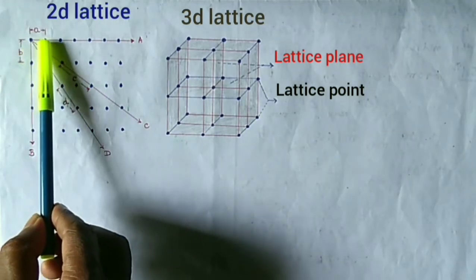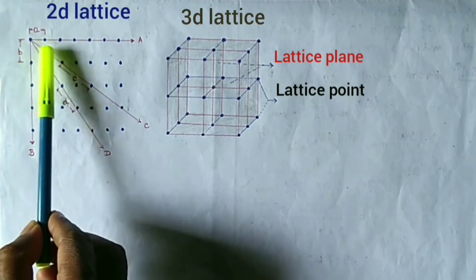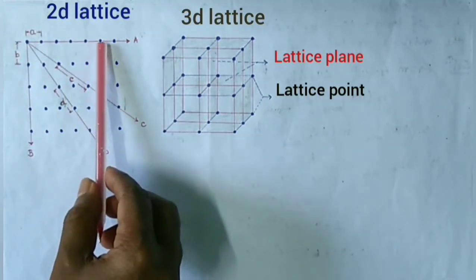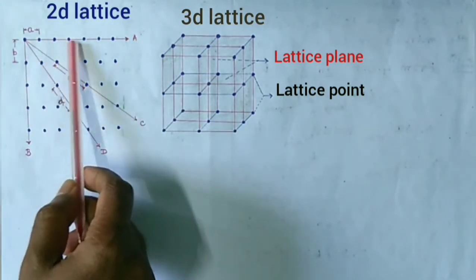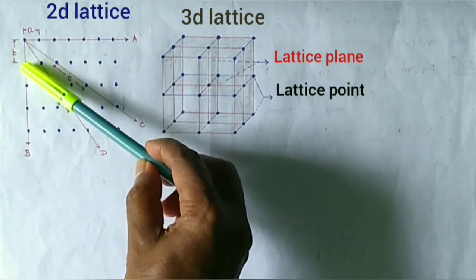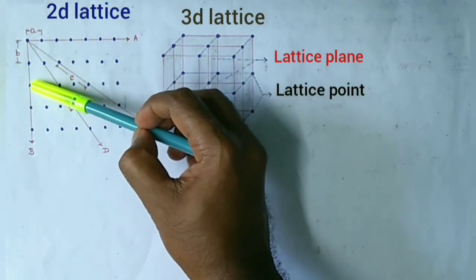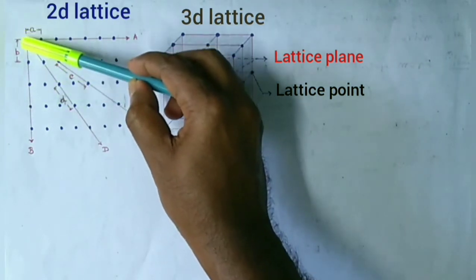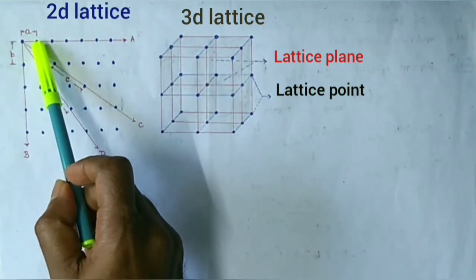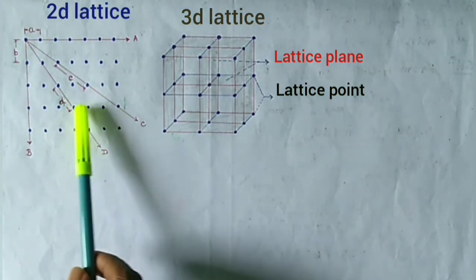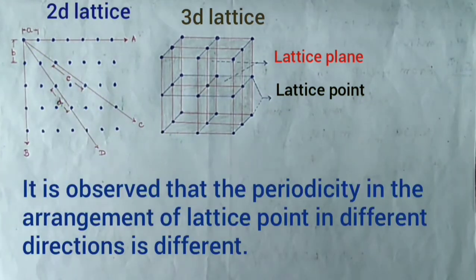The distance between two adjacent lattice points is the lattice constant. Along this direction, the distance between two neighboring points is A, and repetition of this distance creates the array along direction A. The distance of the nth lattice point from this point is Na. Similarly, along this direction, the distance between two neighboring points is B, and the repetition of this distance creates the array along direction B. The distance of the nth lattice point in this direction is NB. The distance A is the periodicity along direction A, and the distance B is the periodicity along direction B. So students, there are many directions in the lattice, and the periodicity in the arrangement of lattice points in different directions is different.